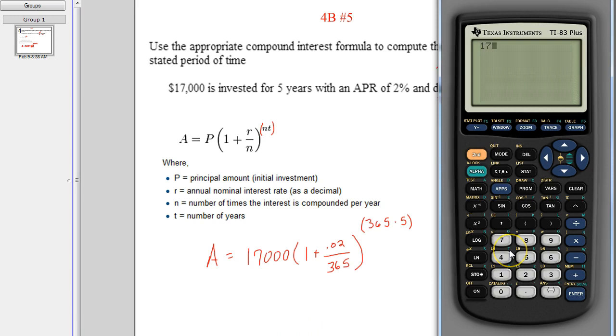Now I'm going to show you what a lot of people do wrong here. I'm going to do the 17,000 times parenthesis 1 plus the rate divided by 365. This is what a lot of people do wrong. They do the power of, and then because there's no parenthesis given to you in the formula, they do 365 times 5, and they get this number, 86,000.